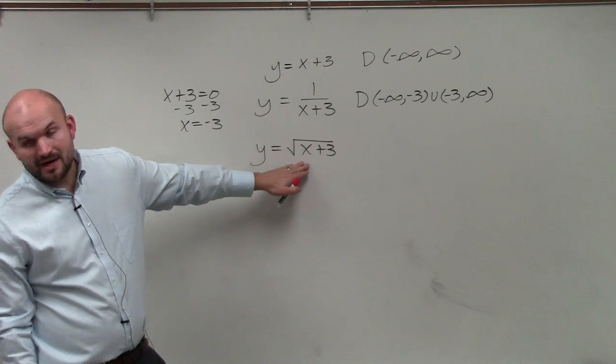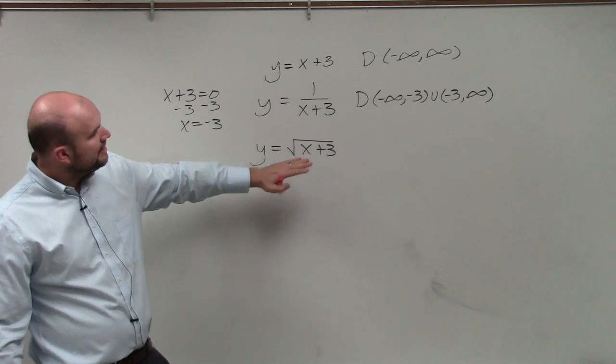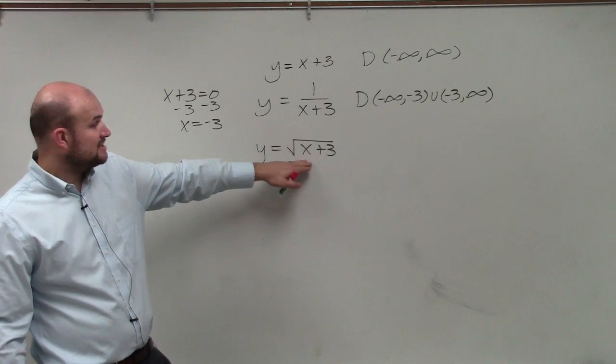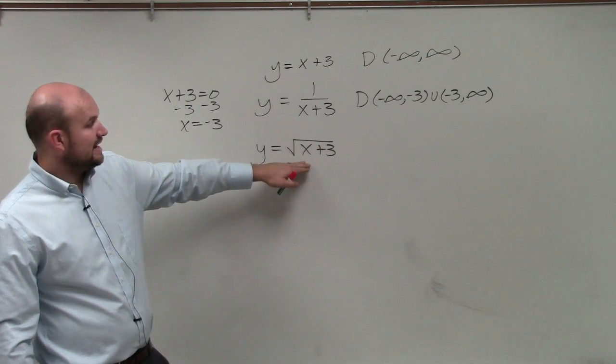In here, though, we can't divide by 0. So we don't need to worry about this, like this example. However, in this case, you can see that there's numbers that are going to make my radical negative. And I can't divide by negative number or negative radical.